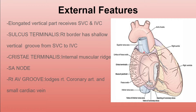The crista terminalis is the internal muscular ridge corresponding to the sulcus terminalis — it is essentially the inner muscular ridge of the sulcus terminalis. The SA node, also known as the pacemaker of the heart, is located in the upper part of the sulcus terminalis.